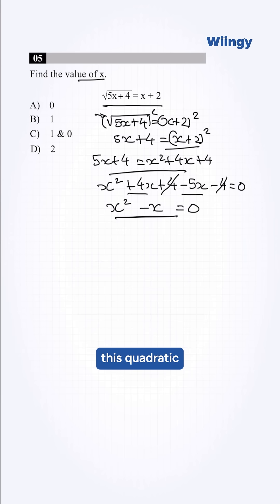Now factoring this quadratic, it will become x into x minus 1 equal to 0. So x is equal to 0, and x minus 1 equal to 0, which is x is equal to 1. We have x is equal to 1 and x is equal to 0 as our answer.